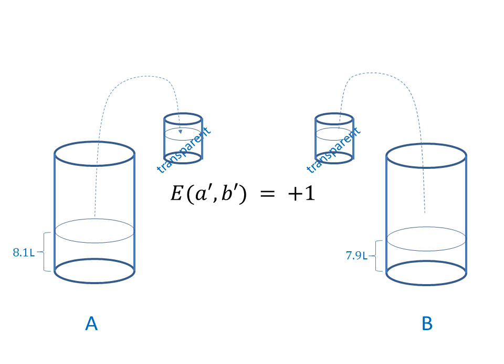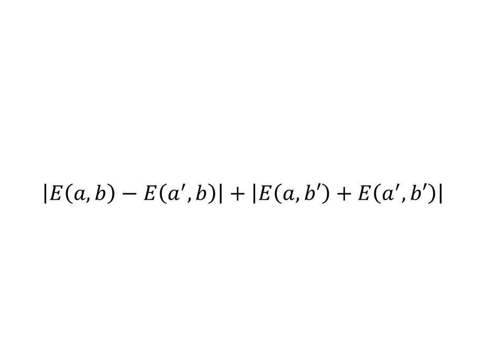Fourth coincidence measurement. Evidently the result for this measurement will be E_A'B' equals plus one, because the water in both vessels is transparent. Thus we get the results.